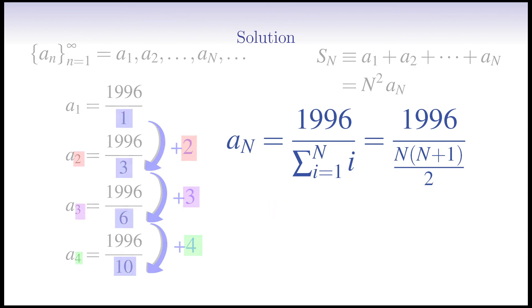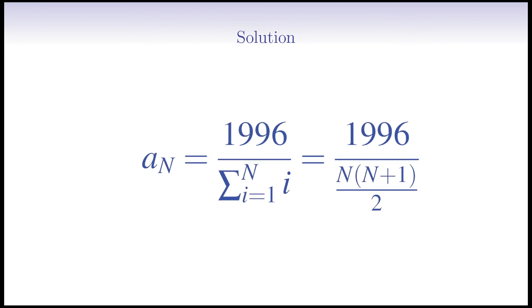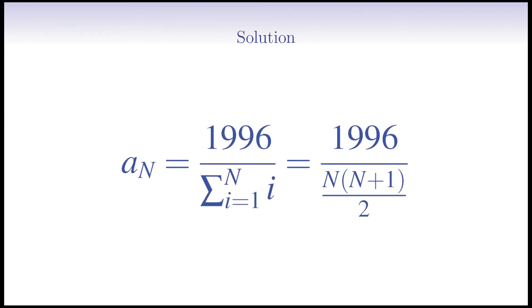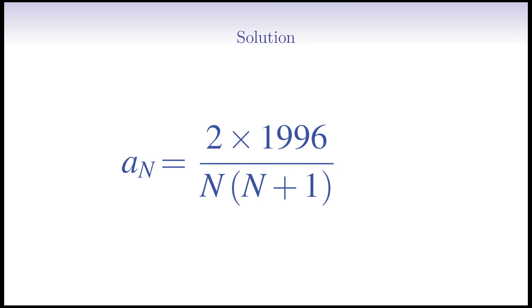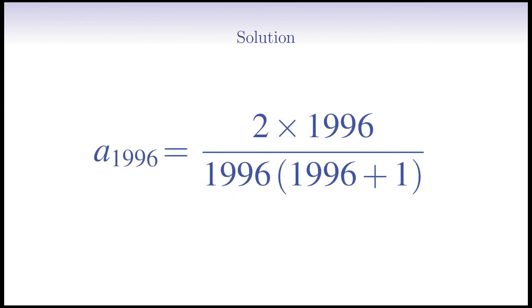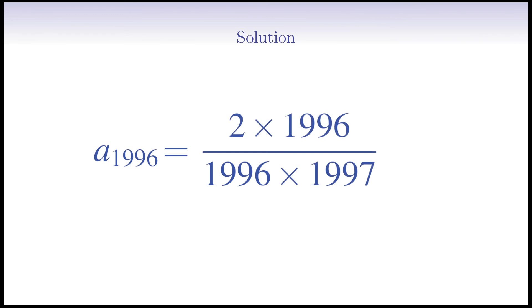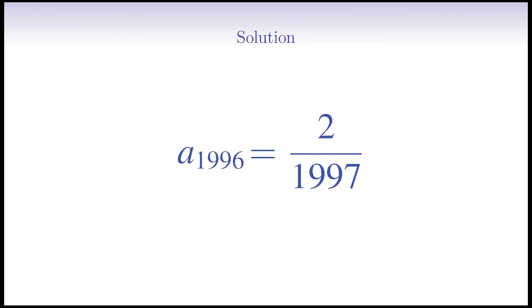Good. We have AN. We multiply the top and bottom of the fraction by 2 to get 2 multiplied by 1996 divided by n times n plus 1. For the term number 1996, we have to replace n with 1996. We cancel 1996 from the top and bottom. So, A1996 is 2 over 1997.